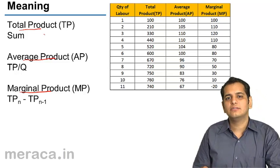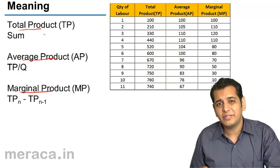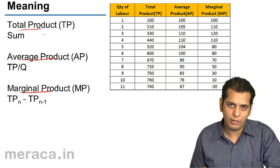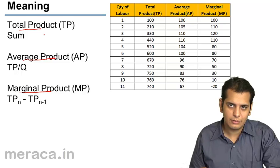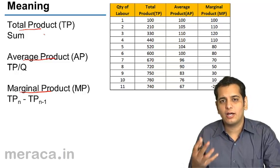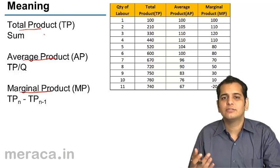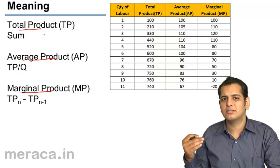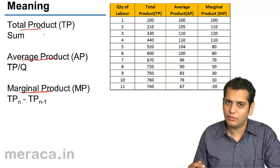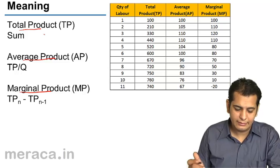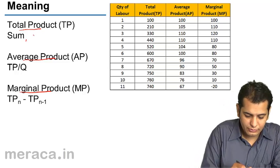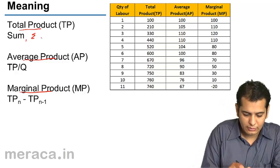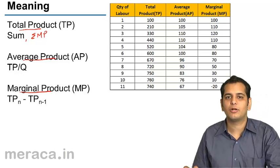Total Product is the summation of all the Marginal Products. It is the product derived by adding all the Marginal Products at all levels — it is the summation of all Marginal Products.